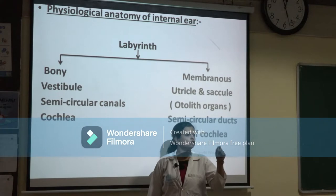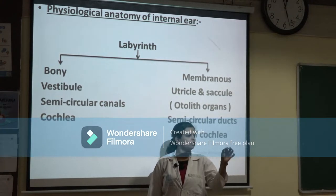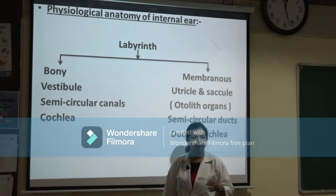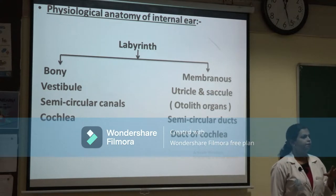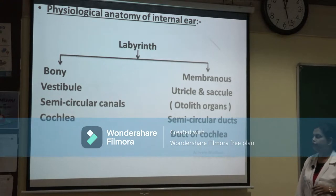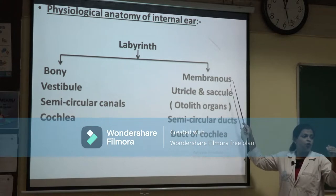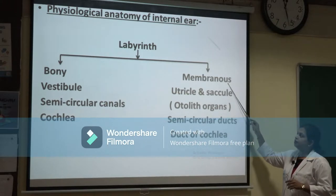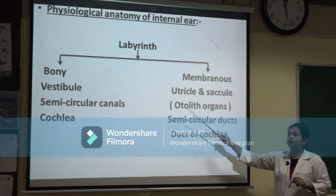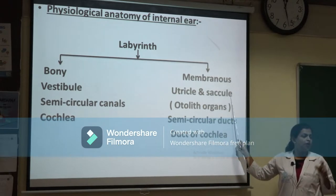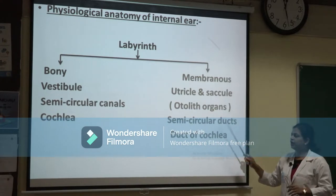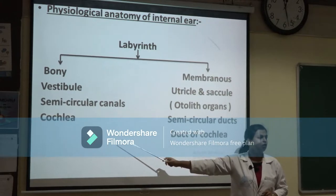The vestibule is made up of utricle and saccule. There are three semicircular canals: anterior, posterior, and lateral. The cochlea is the receptor organ of hearing. Inside the bony labyrinth is the membranous labyrinth, which consists of membranous semicircular canals, utricle and saccule within the bony vestibule, and the duct of cochlea within the bony cochlea.